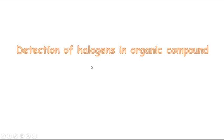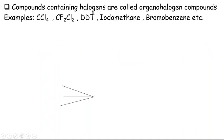Dear Students, today's topic is Detection of Halogens in Organic Compounds. If we have an organic compound, how can we confirm the presence of halogen in a particular organic compound? Compounds containing halogens are called organo-halogen compounds.